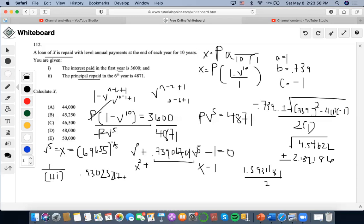Right, I'm going to move this to the other side. I'm going to do 1 divided by 0.93023267, and I'm going to subtract 1 to find i. So i is going to be 0.07499, right.